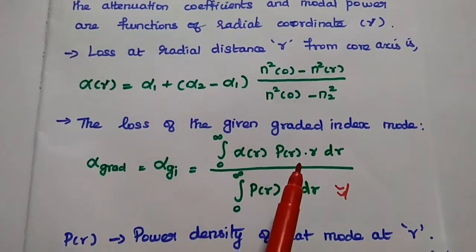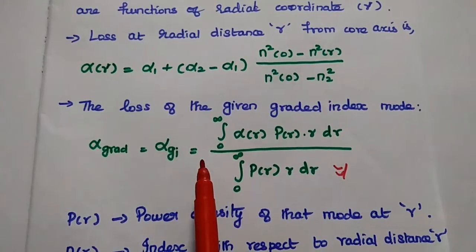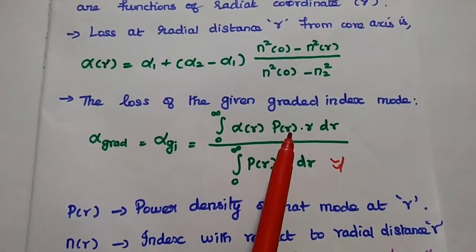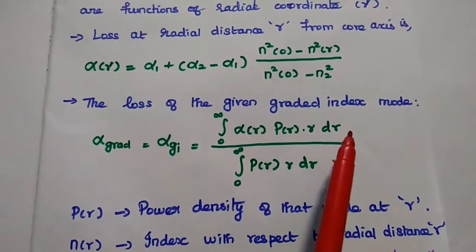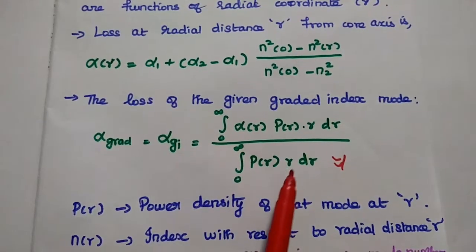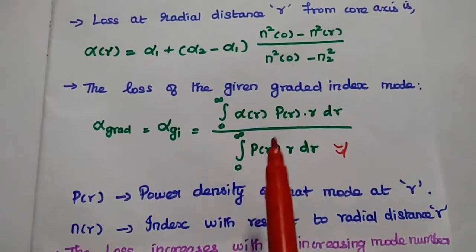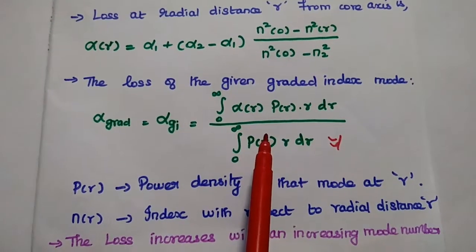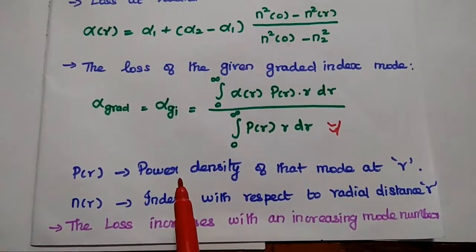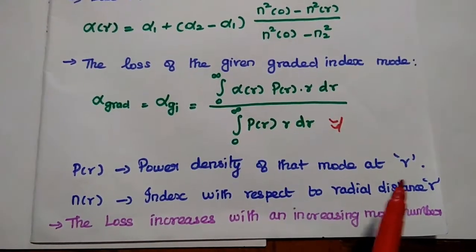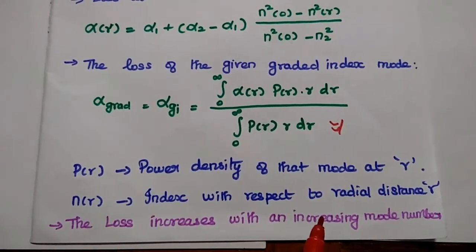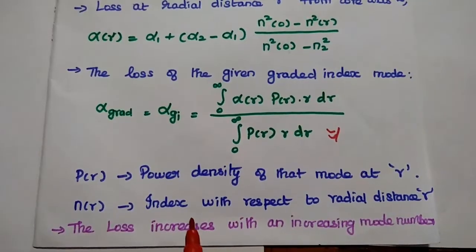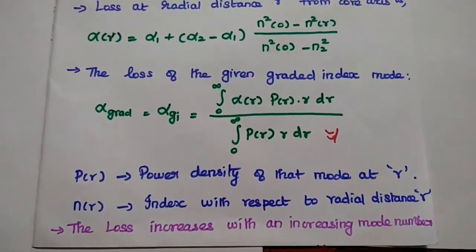The loss of the graded index mode, alpha_gi, is given as the integration of alpha(r) multiplied by the power at radial distance r times r dr, divided by the integration of p(r) times r dr. Here p(r) is the power density of that mode at distance r, and n(r) varies with radial distance. The loss increases with increasing mode number. In graded index fiber, the loss depends on both the mode number and the radial distance.